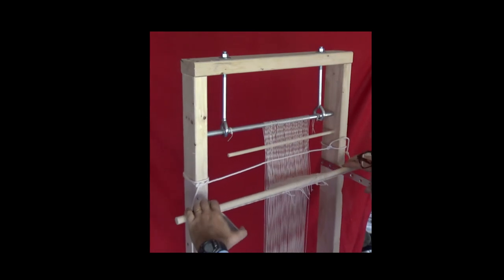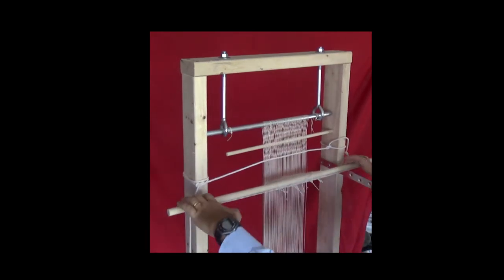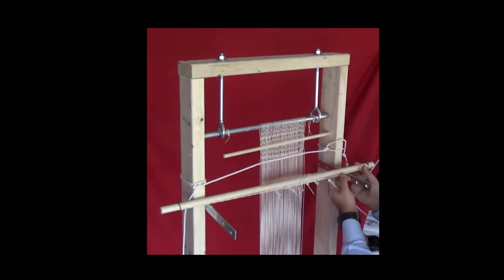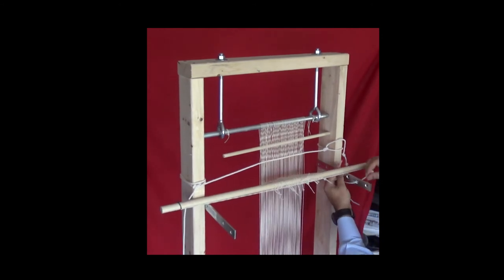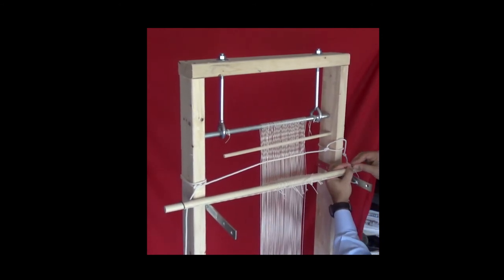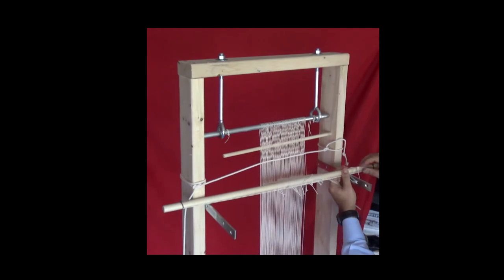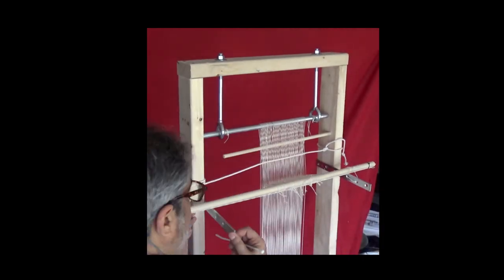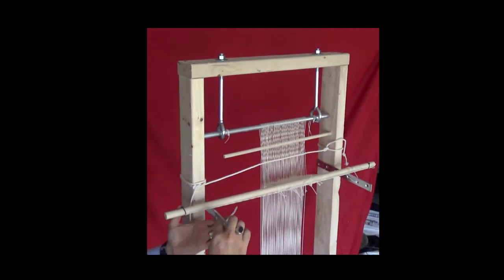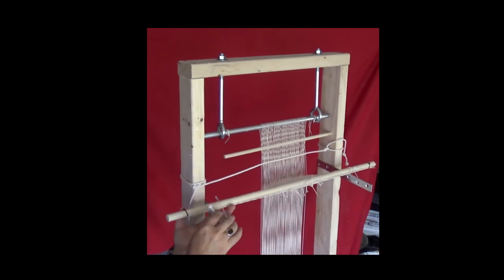We now need to add some tension to the heddle stick. Use a zip tie or another string to pull on heddle stick as shown. Start slowly. You can always tighten more if you need to, especially if you use a zip tie. Pull the heddle stick towards you and tighten the zip tie.